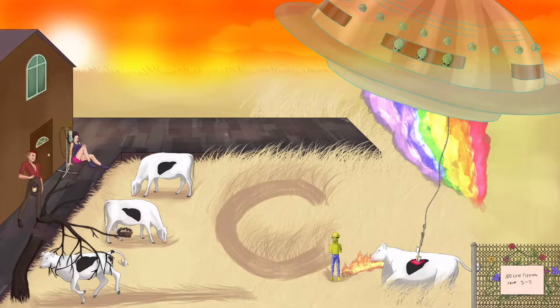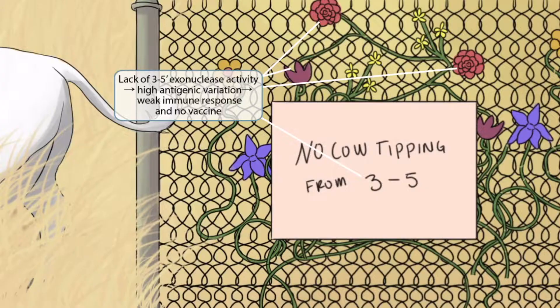Now look at this pretty fence with a sign that reads 'No cow tipping from 3 to 5.' The numbers 3 to 5 represent the 3-to-5' exonuclease enzyme that hepatitis C lacks. Normally a 3-to-5' exonuclease reads mistakes during replication and cuts them out. If these mistakes are not cut out, an incredible variety of antigens can blossom regularly on the envelope. To help you remember antigenic variation, we have all these different flowers growing on the fence — so many different types blossoming.